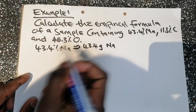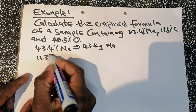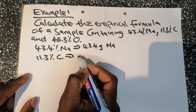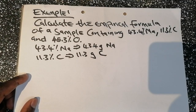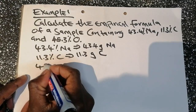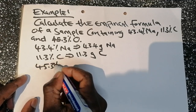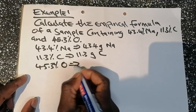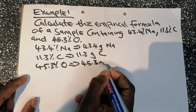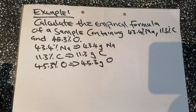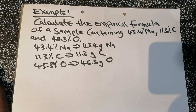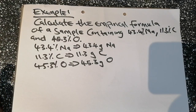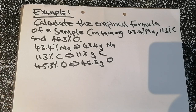11.3% carbon is equivalent to 11.3 grams carbon. 45.3% oxygen is equivalent to 45.3 grams oxygen. With oxygen we don't write it as a diatomic molecule — hydrogen and nitrogen are diatomic molecules, but here we just write one element. Step one is now complete.